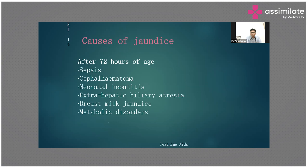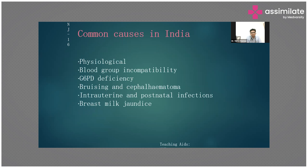After 72 hours: sepsis, cephalohematoma, neonatal hepatitis, extrahepatic biliary atresia, breast milk jaundice, metabolic disorder. Common causes in the physiological period can be mentioned: physiological jaundice, blood group incompatibility, G6PD deficiency, bruising and cephalohematoma, intrauterine postnatal infection, TORCH infection, and breast milk jaundice, which I already mentioned.